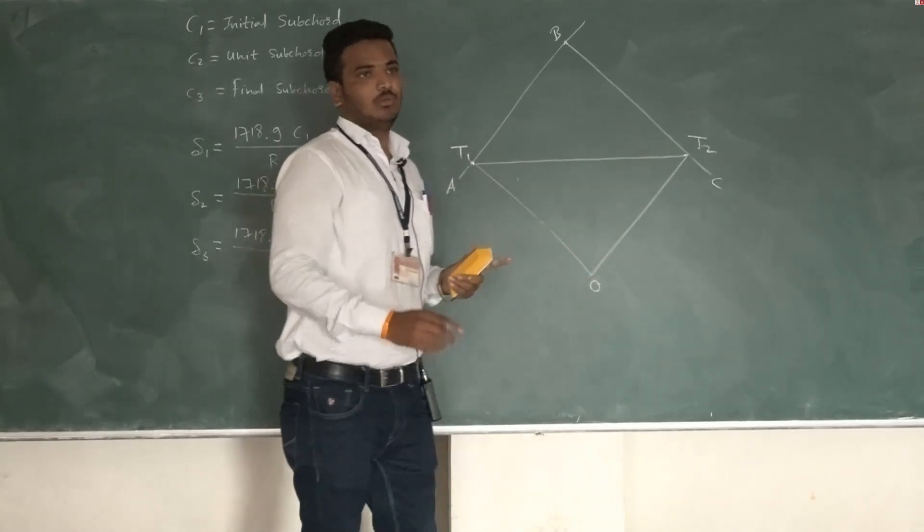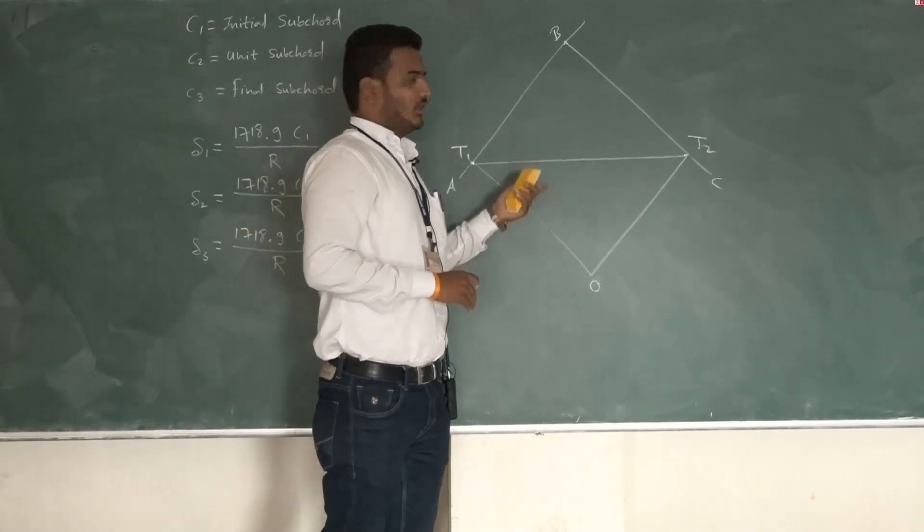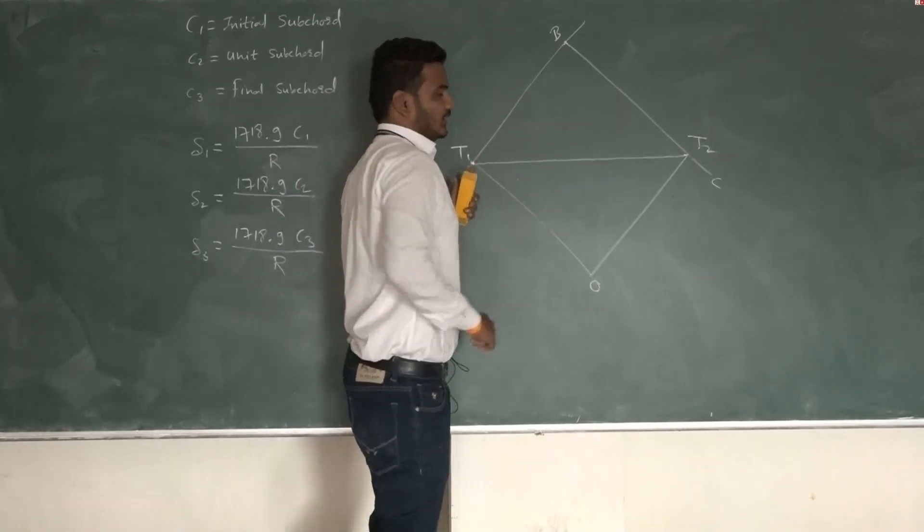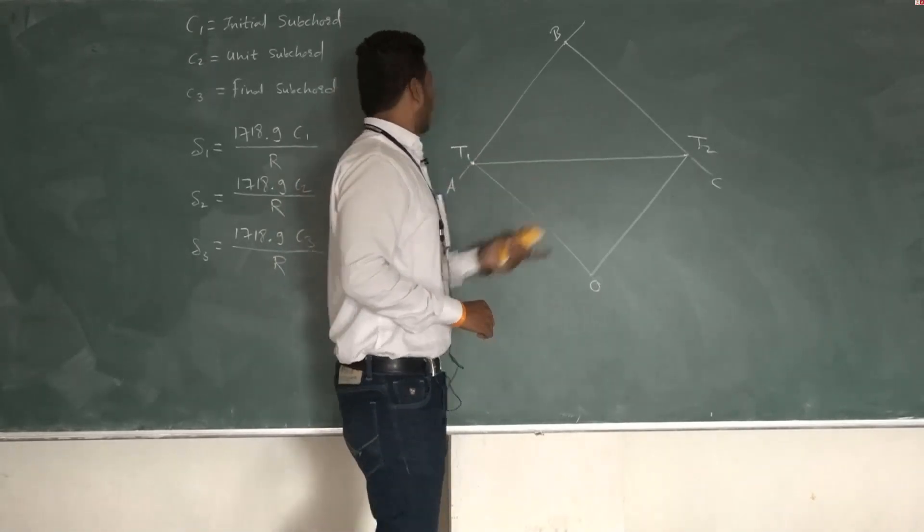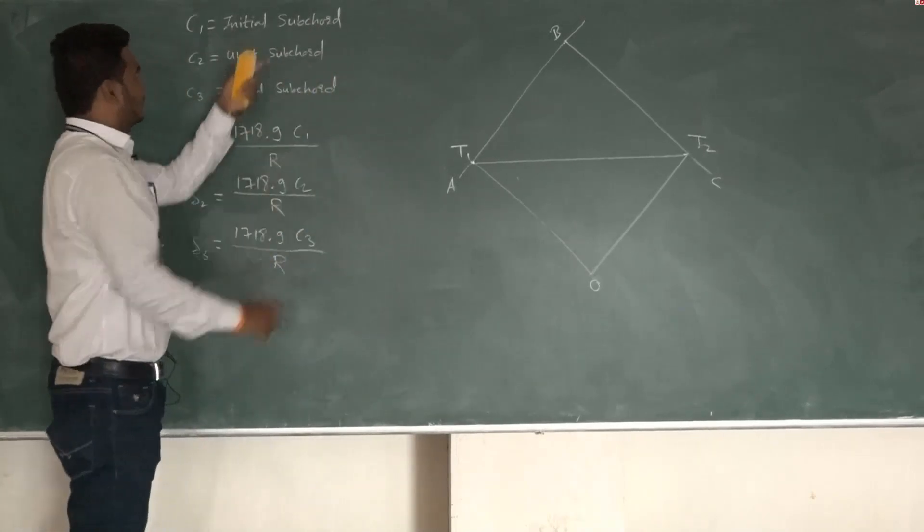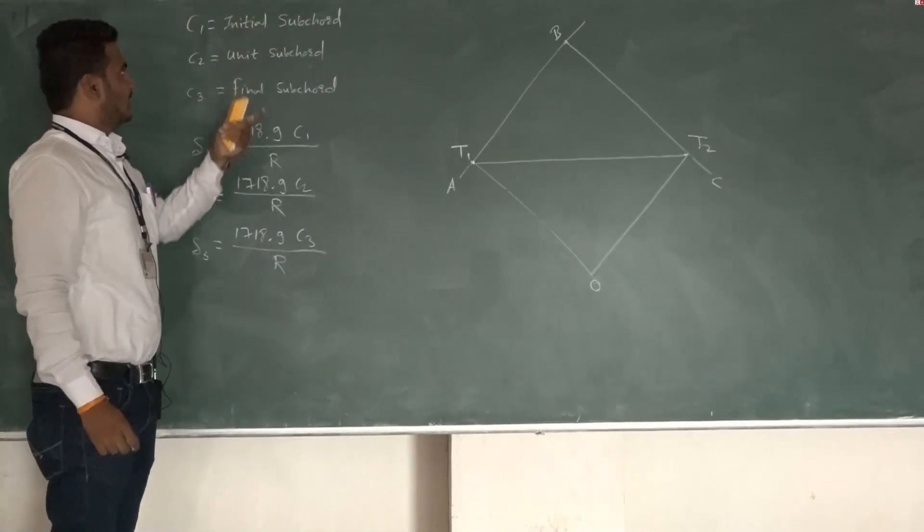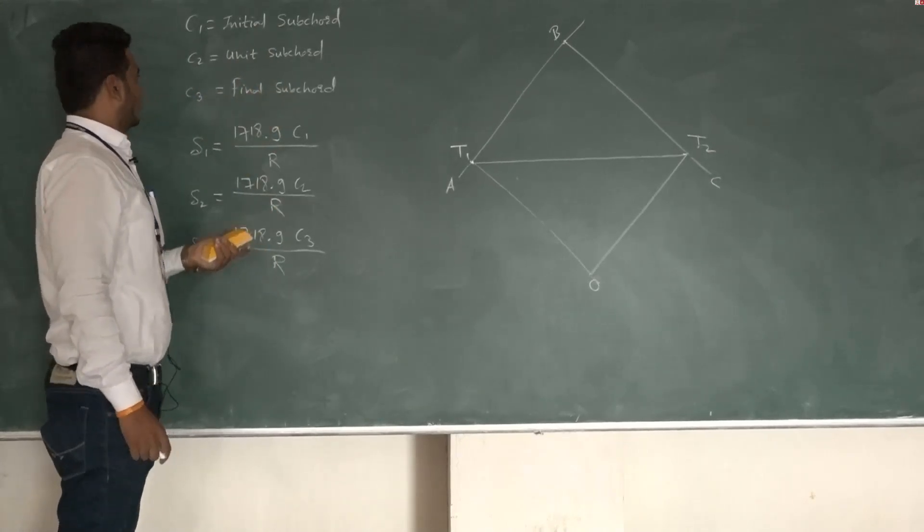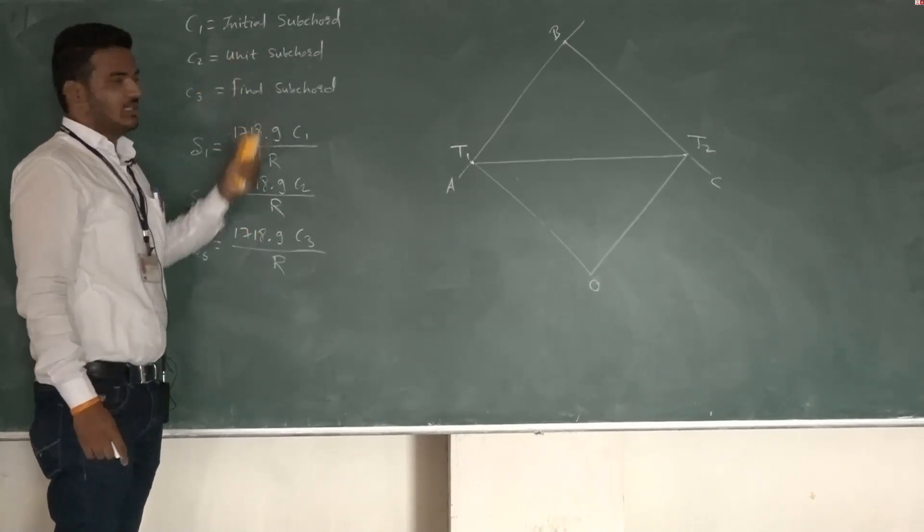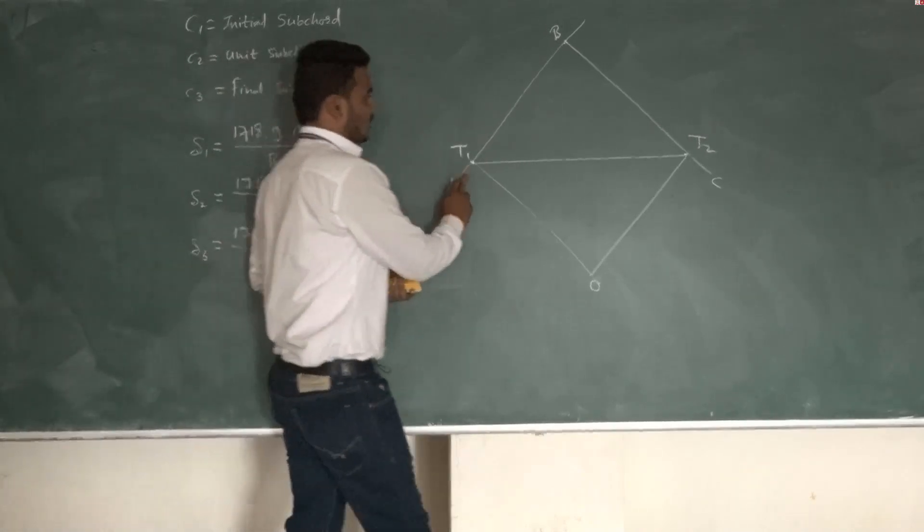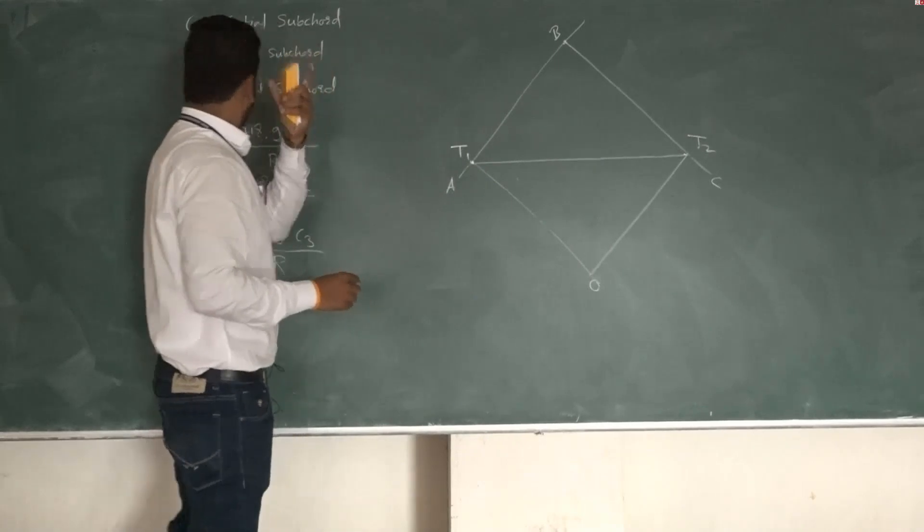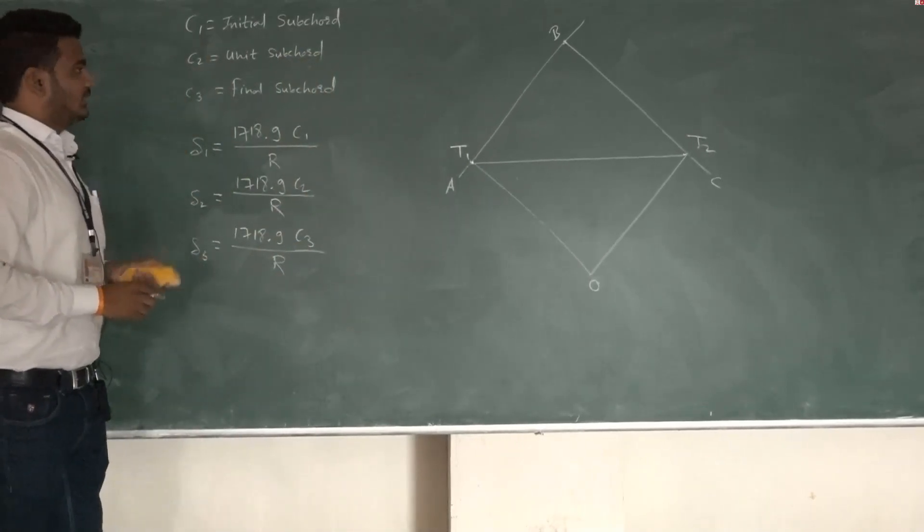Divide that chord length into number of parts, in which the middle part is called as unit chord and the initial part C1 is called as initial sub chord, final part C3 is called as final sub chord. We have divided T1 to T2 total curve length into three sub chords C1, C2 and C3.